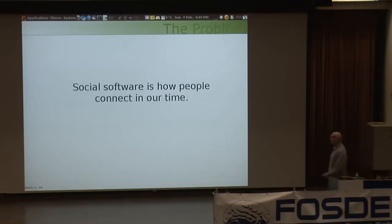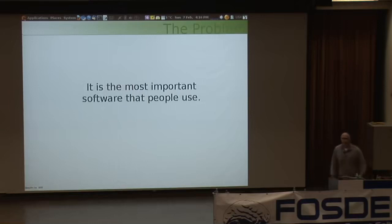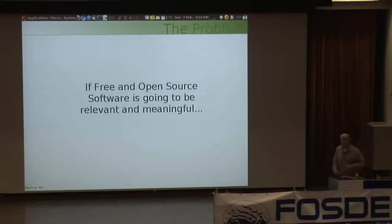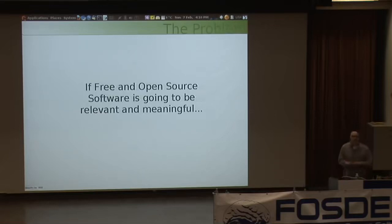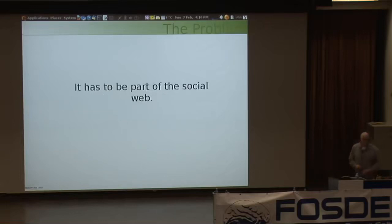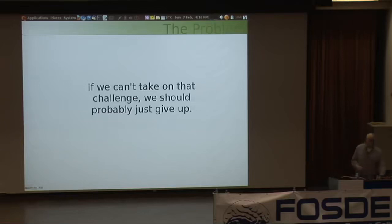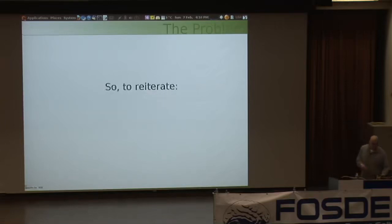Social software is how people connect in 2010. It is the most important software that people are using right now. It connects people with their friends and their families. For many people, their most important relationships are made and maintained online. If free and open source software means anything, if it's going to be meaningful and relevant in the 2010s, then we have to be participating in the social web. If we can't take on that challenge, pretty much what we do is pointless.